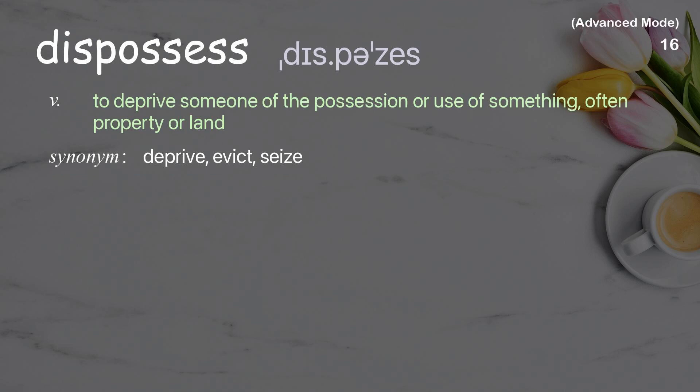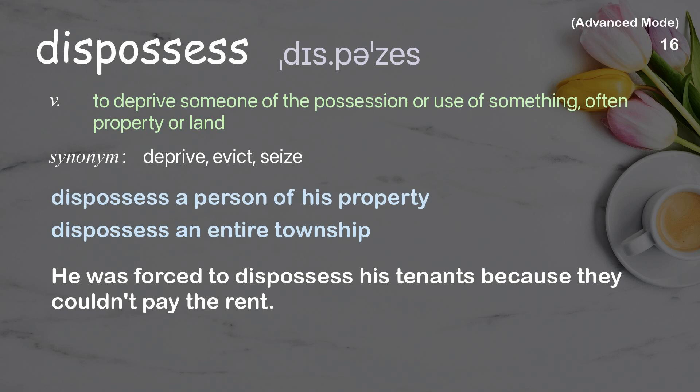Dispossess: to deprive someone of the possession or use of something, often property or land. Examples: dispossess a person of his property, dispossess an entire township. He was forced to dispossess his tenants because they couldn't pay the rent.